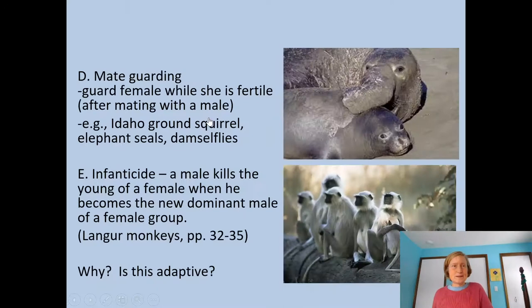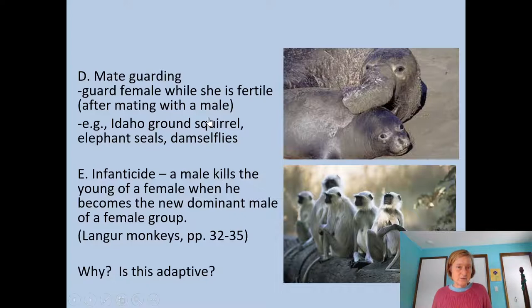And then there's mate guarding. After you've mated with a female who is still fertile, you guard her to protect against other males mating with her, thereby protecting your reproductive investment. Lots of animals do this: Idaho ground squirrels, elephant seals, and damselflies will guard the female they just mated with to prevent other males from mating with her.